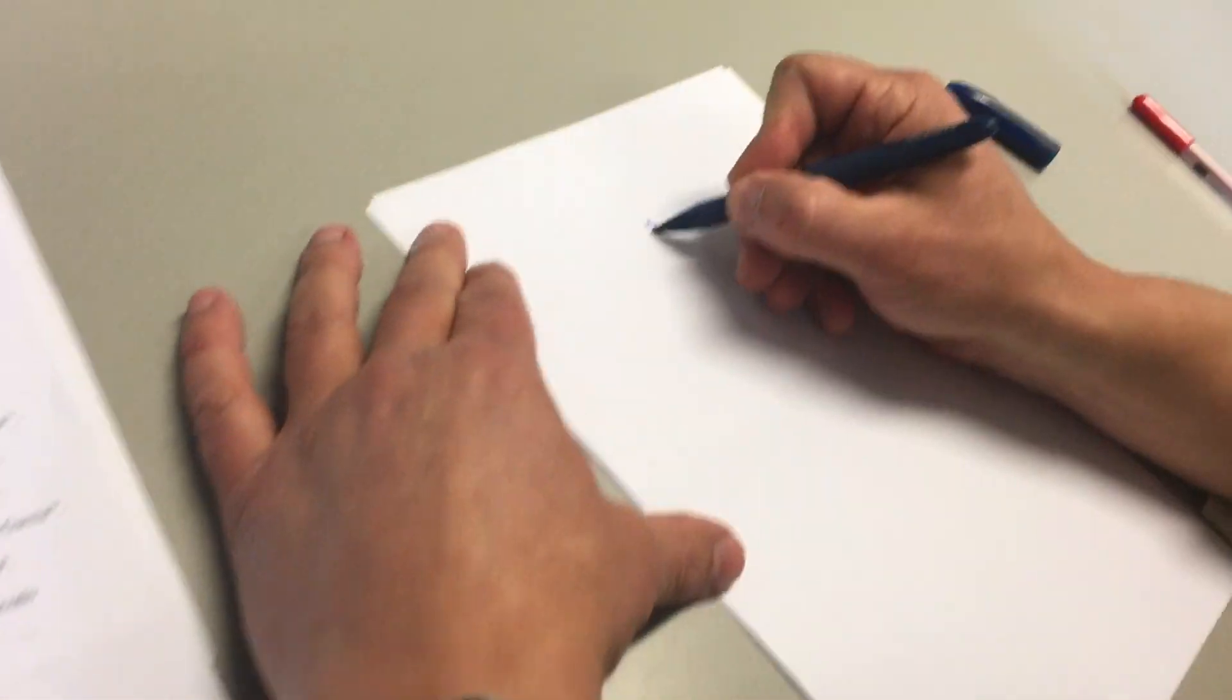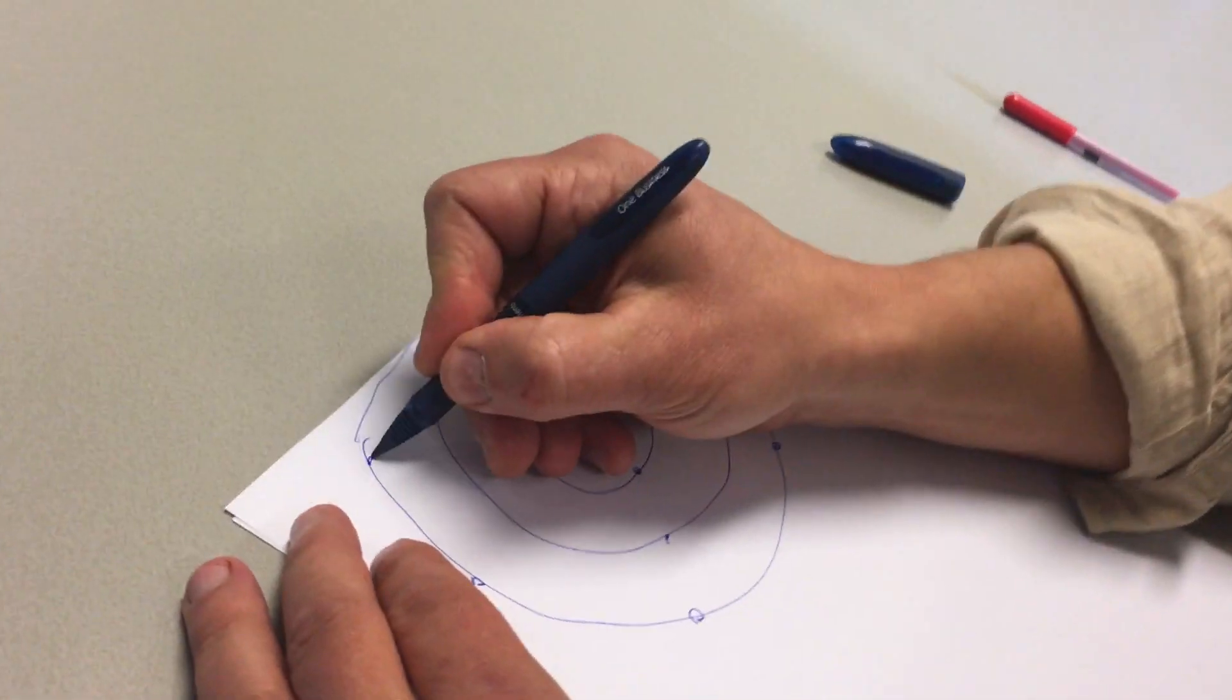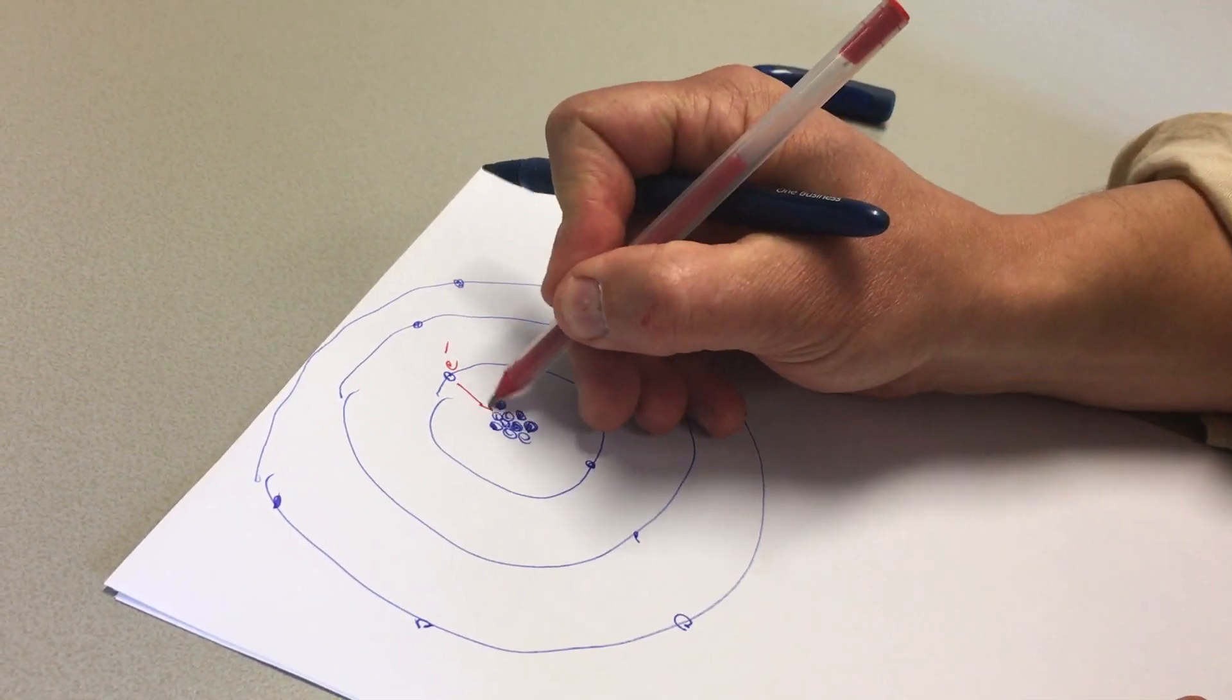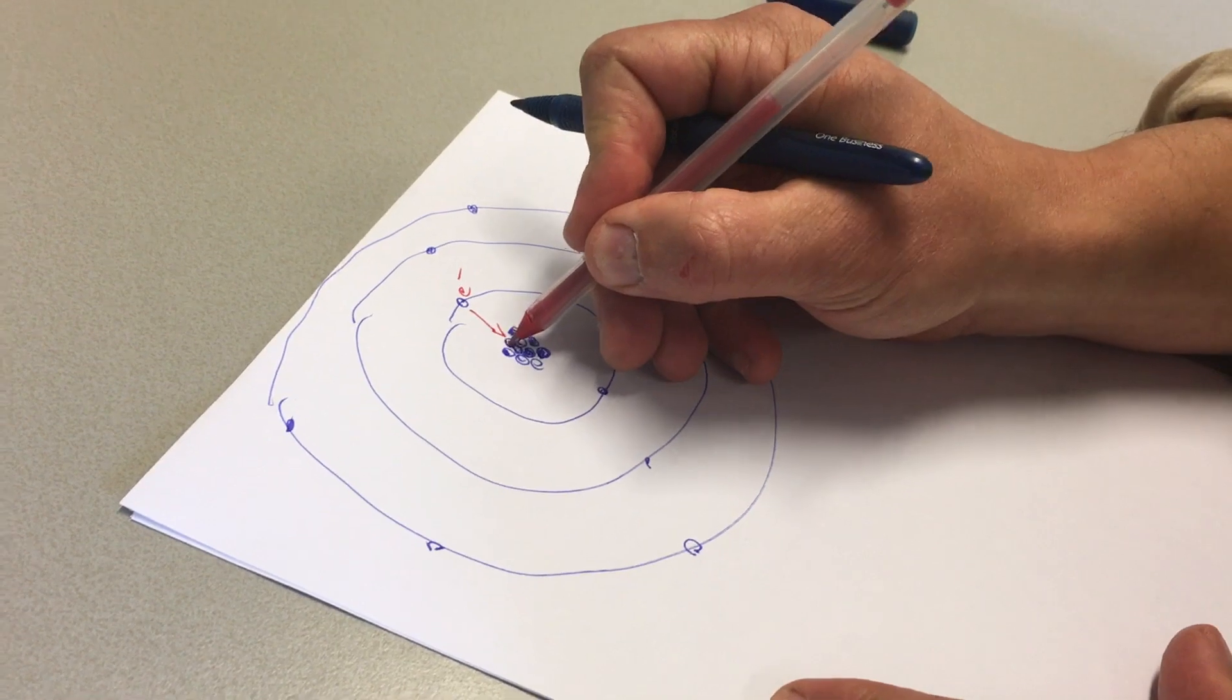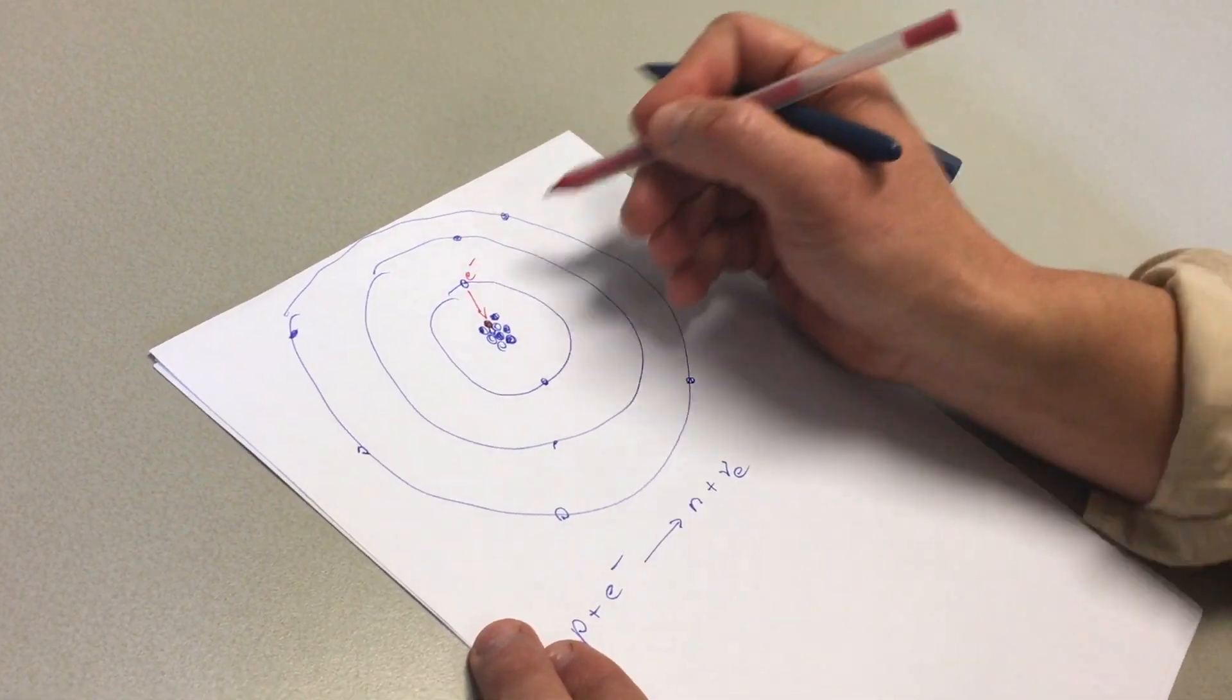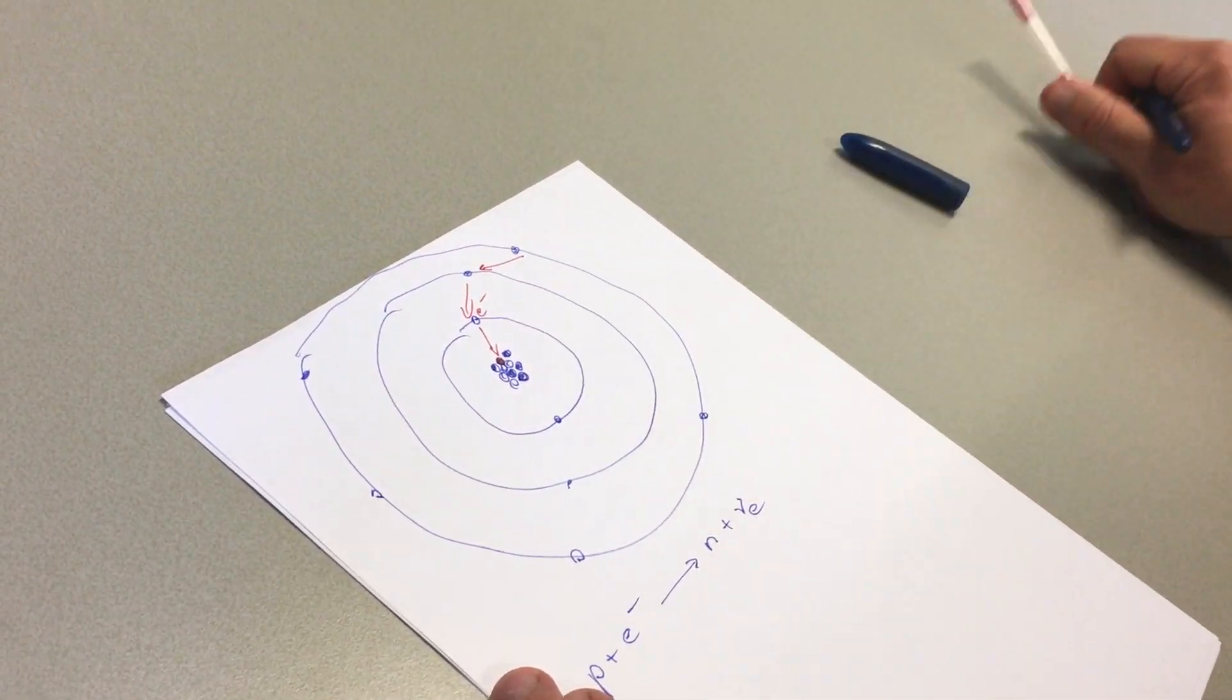In some atomic nuclei, an interesting process can happen, namely an electron from the inner orbital can get absorbed by one of the protons in the nucleus. Then there is a vacancy in this inner electron shell, and the atom actually rearranges its atomic electrons.